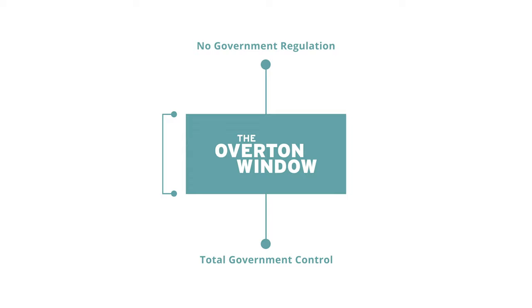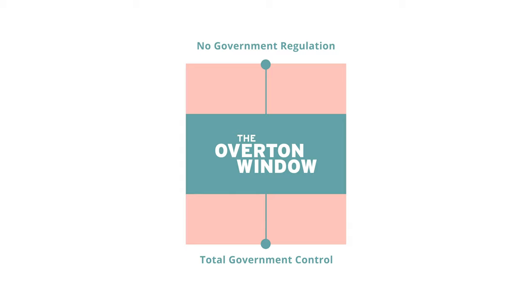But ideas that are outside the Overton window are ideas that might be too radical for the public to accept, and any politician who supports ideas outside the Overton window today risks getting defeated in the next election.